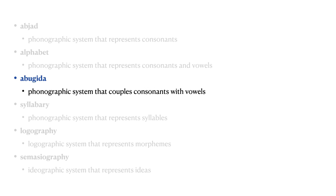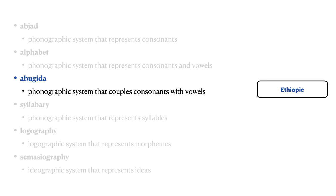An abugida is a phonographic writing system that couples consonants with vowels marked as diacritics. The Brahmic writing systems and the Ethiopic writing system are examples of abugidas.